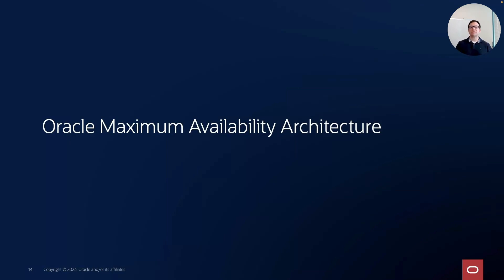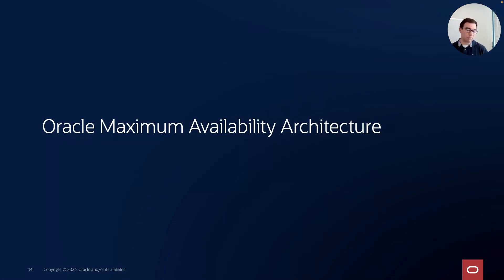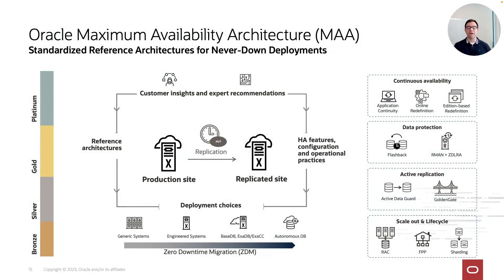The other question is: how do you protect your database from failures? What if you have a production system that doesn't allow any downtime for planned or unplanned maintenance? The answer is Oracle's Maximum Availability Architecture, or MAA. Oracle MAA provides a standardized reference architecture set for never-down deployments, with four levels: bronze, silver, gold, and platinum. As you go up the level, you increase the level of protection.